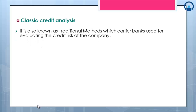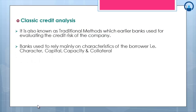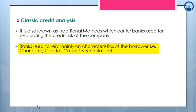The next is classic credit analysis. Earlier, banks used to make use of this traditional method for evaluating the credit risk of a company. Traditionally, most banks have relied on subjective judgment to assess the credit risk of a corporate borrower. Essentially, borrowers used information on various borrower characteristics such as character (reputation), capital (leverage), capacity (volatility of earnings), and collateral in deciding whether or not to make a given loan. Developing this type of expert system is time consuming and expensive. Many banks continue to rely primarily on their traditional expert system for evaluating potential borrowers.